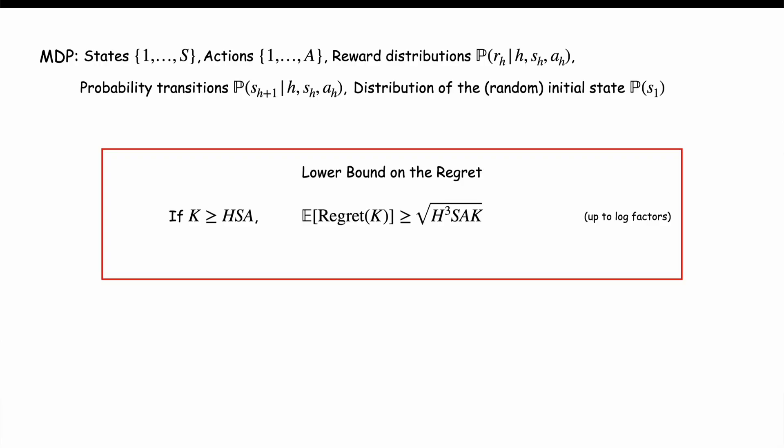And if you are wondering, many algorithms achieve the optimal regret. Now, what is that condition K larger than HsA? HsA is called a burning cost. Concretely, during the first HsA episodes, your rewards may be terrible, but it's okay, your main objective is to collect information on the rewards and the probability transitions. Remember that they both depend on the time state and action HsA, so we need to reach each time state and action tuple HsA several times. That takes many episodes, precisely HsA.